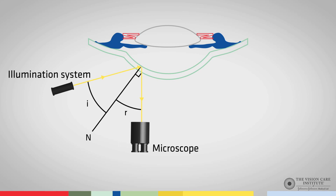We can see in this figure that this will allow us to keep the microscope directly in front of the patient. The key point is that depending on where we want to observe the corneal endothelium, we need to orientate the slit lamp so that the incident and reflection angles are equal.